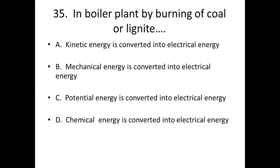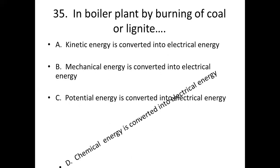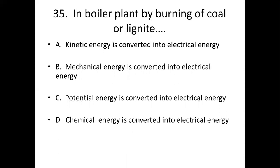35th bit: In a boiler plant, by burning of coal or lignite, dash. Option A: Kinetic energy is converted into electrical energy. Option B: Mechanical energy is converted into electrical energy. Option C: Potential energy is converted into electrical energy. Option D: Chemical energy is converted into electrical energy. Answer — Option D: Chemical energy is converted into electrical energy.